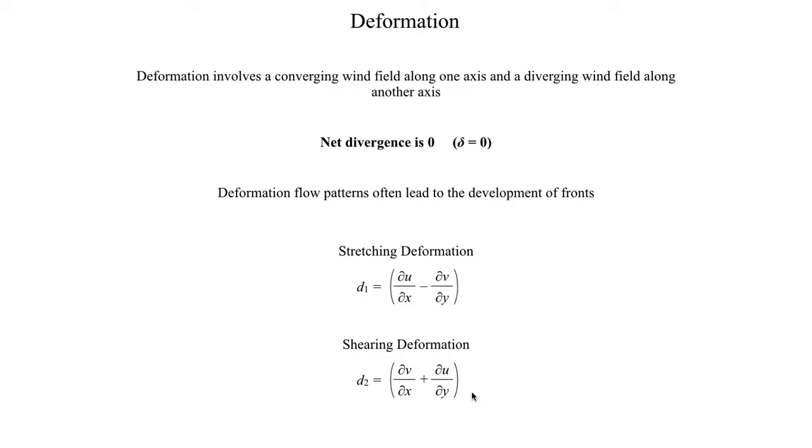And this might also look kind of familiar. This is in fact the vertical vorticity equation with a plus sign instead of a negative sign. So some interesting mathematical shenanigans are going on here with the minus signs and the plus signs. But this is in fact how these two quantities are defined. Stretching deformation d1 is equal to that, shearing deformation d2 is equal to that.